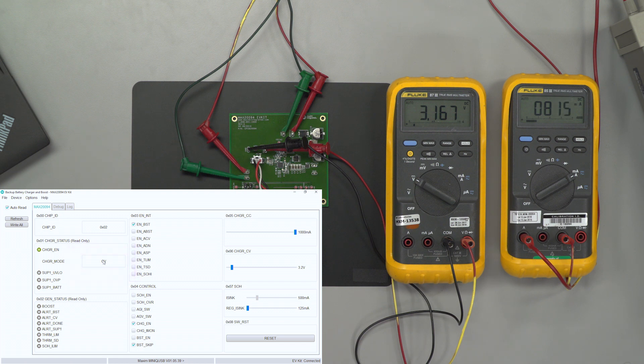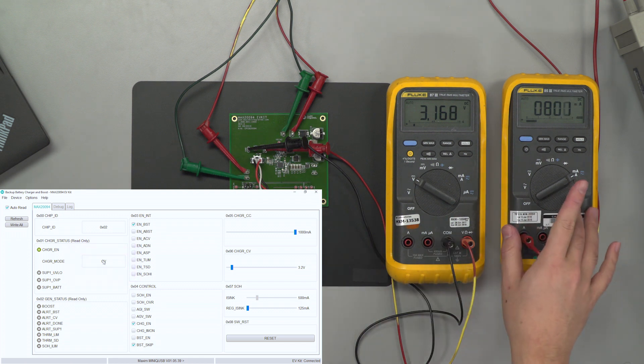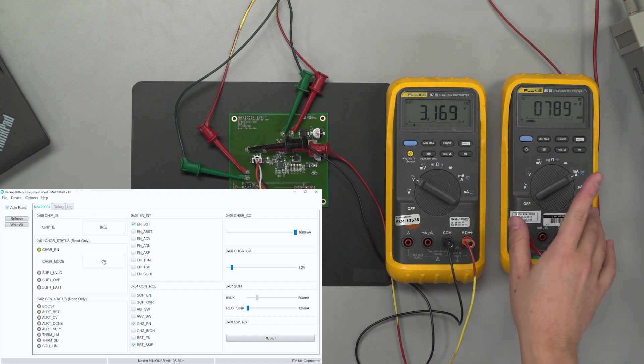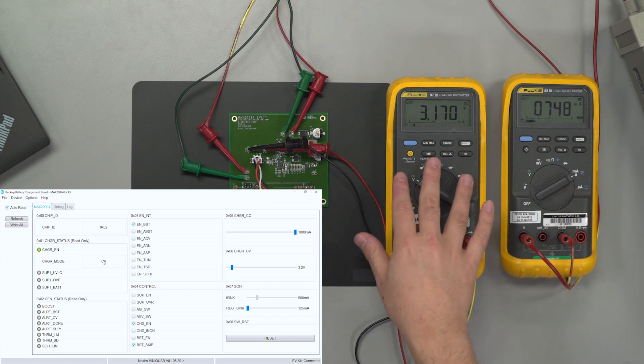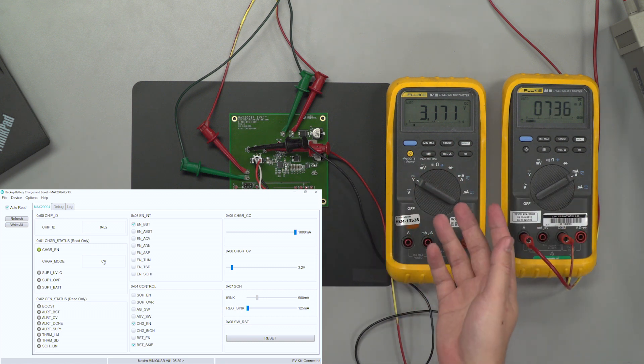The other notable thing is that on the multimeter to the right the current is dropping off as we speak but the voltage is around 3.17. So 3.2 is that threshold.